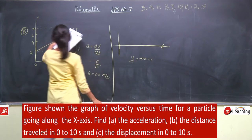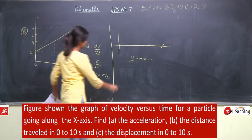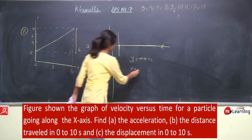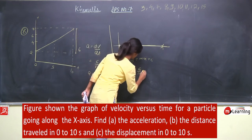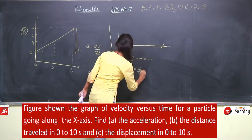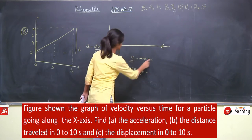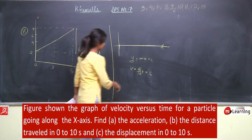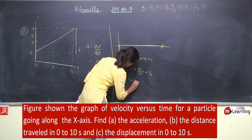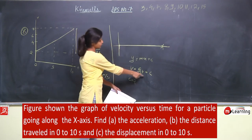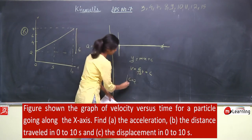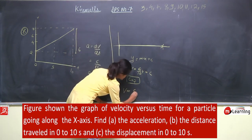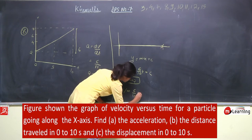इसकी equation क्या हो जाएगी? y = mx + c — straight line की equation होती है। y-axis में v है, slope is 6 by 10, x-coordinate में time है, plus constant. At t = 0, velocity कितनी है? 2. तो constant की value 2 हो जाएगी। Equation is v = (6/10)t + 2.